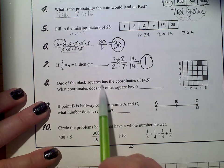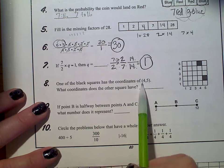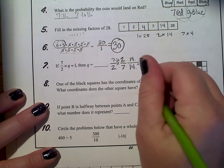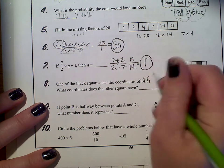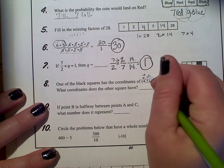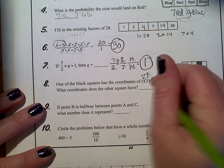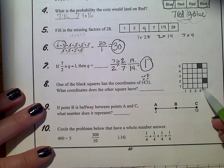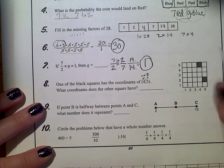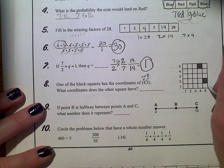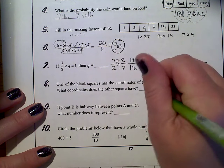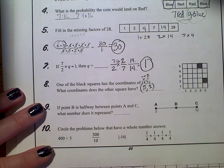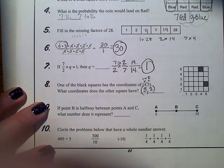One of the black squares has the coordinates of over 4 up 5. So that's your X and your Y, just like the alphabet that goes first over and then up or down. So what is the coordinate of the other square? So over 4 up 5, so that's this one. This one is over 5 up 2.